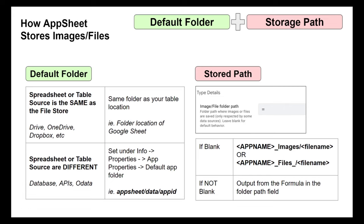The second option is if you actually have a formula in the type details that is not blank. In that case, the folder path is just going to be the output from that formula. If you have forward slashes in the formula, each of those will essentially create a new subfolder, so you can get very organized using other column values from the record. Once you've figured out the storage path, it's the default folder plus that storage path combined — that is your full path that AppSheet will then store to your file store.